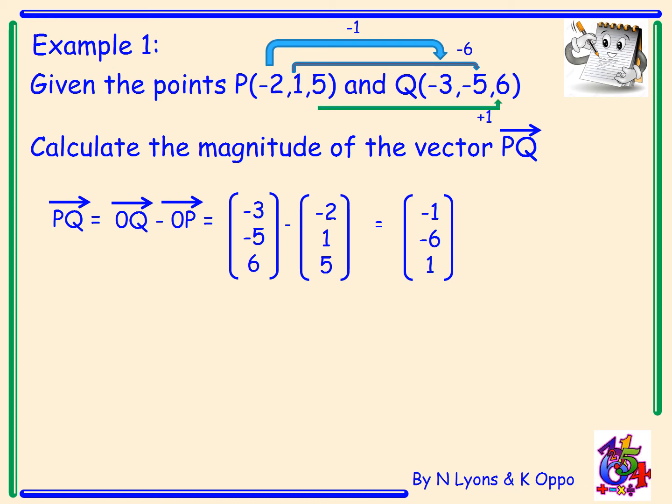Do you prefer to subtract, which sometimes you have to deal with horrible double negatives, or do you prefer to add on? More often than not, I'm going to be adding on. So anyway, now I have the vector PQ has the components minus 1, minus 6, 1. I need to work out the magnitude of PQ. So the magnitude of PQ, look how it's denoted, equals, we're going to square the components, add them, and take the square root. So that gives me minus 1 squared, plus minus 6 squared, plus 1 squared. So using your calculator, you've got the square root of 38.